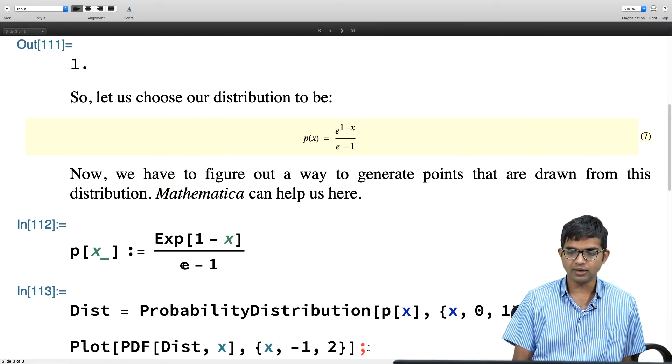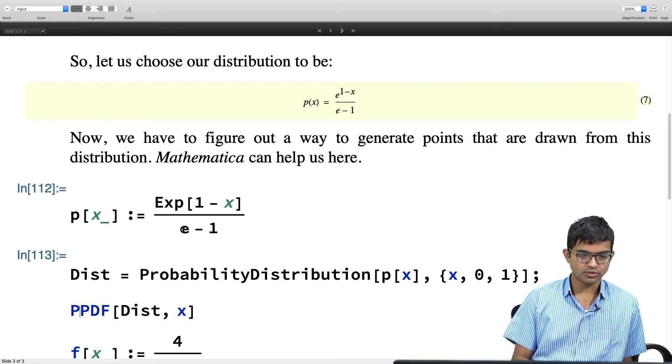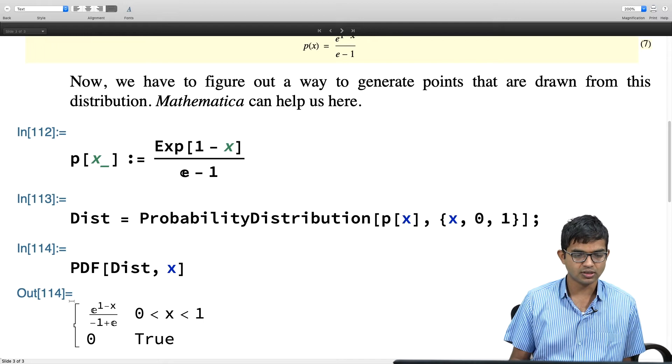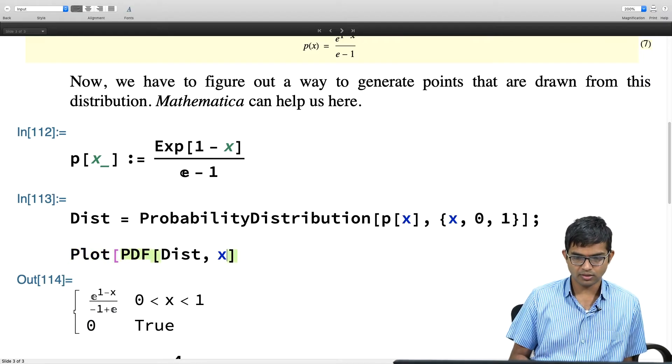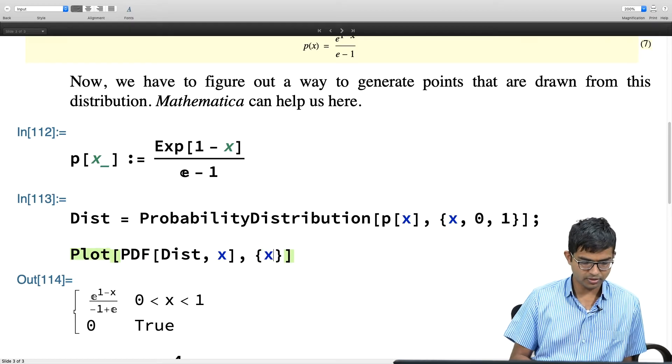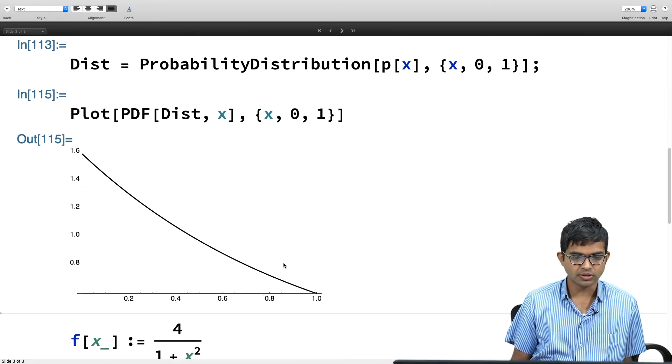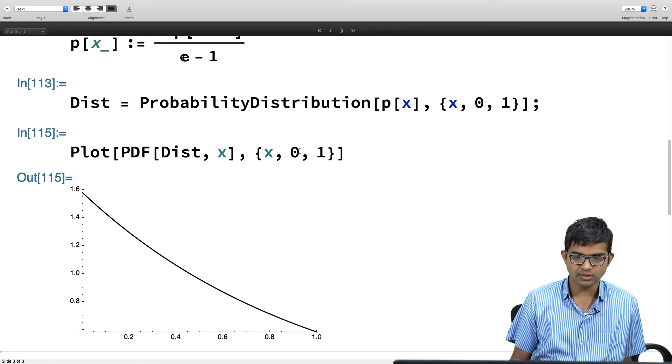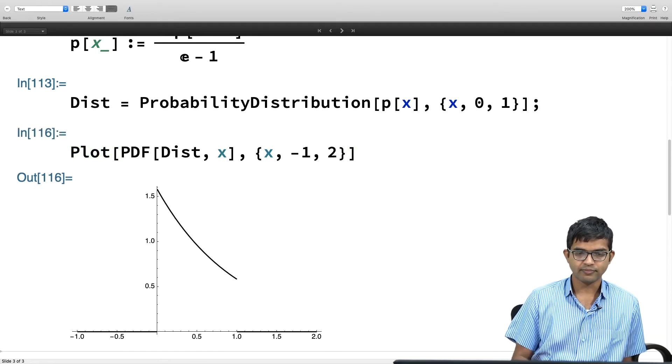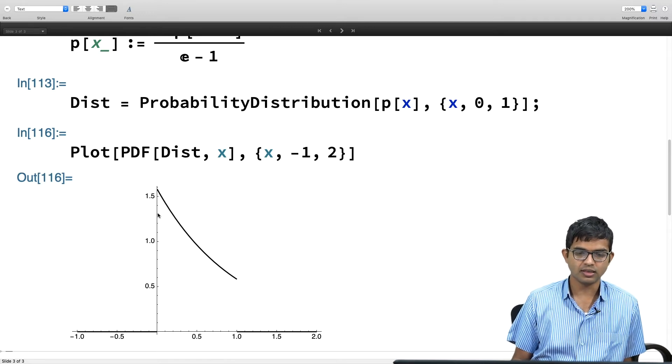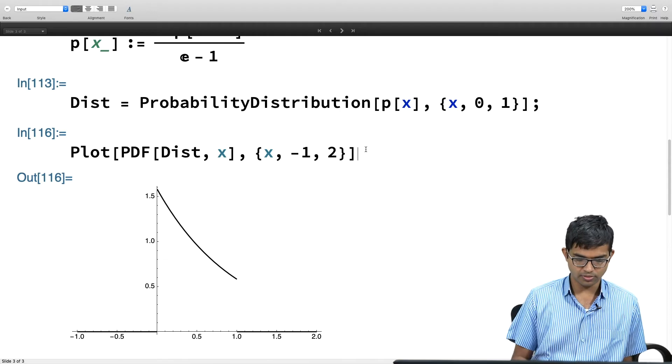I have said that I want to generate a bunch of random numbers drawn from this distribution. I have told you what the distribution is and now how do I get my program to calculate this? You can write your own small block. There is a way to do this and it is not so complicated. But Mathematica can help us here. There is a readymade function for us. First what I will do is I will define this function called p exponential of 1 minus x divided by e minus 1. There is this function called probability distribution in Mathematica. You have to just feed in your function and go from x from 0 to 1 and then it becomes, it has the status of a probability distribution.